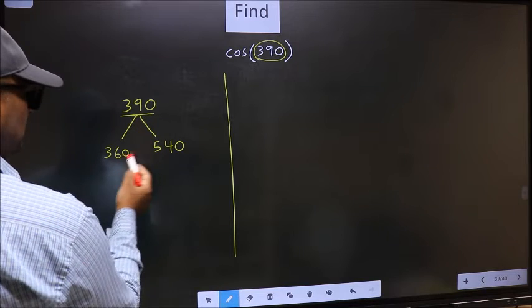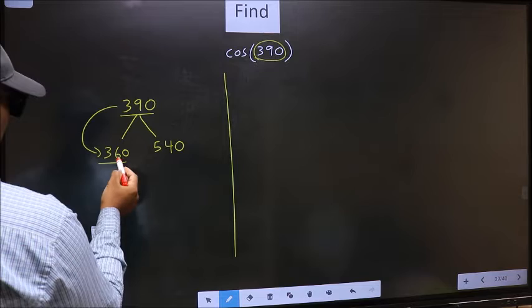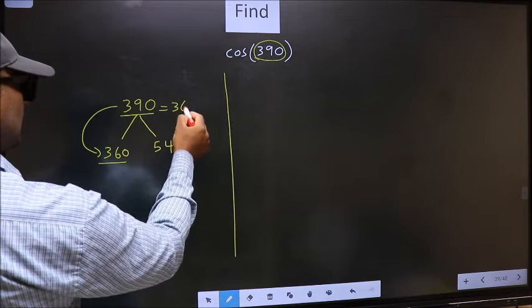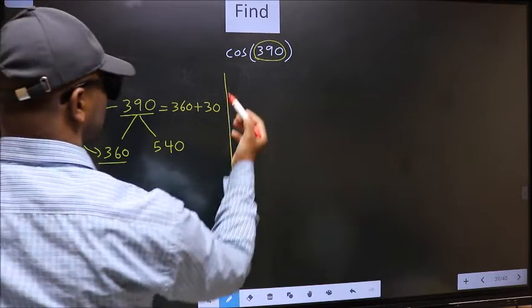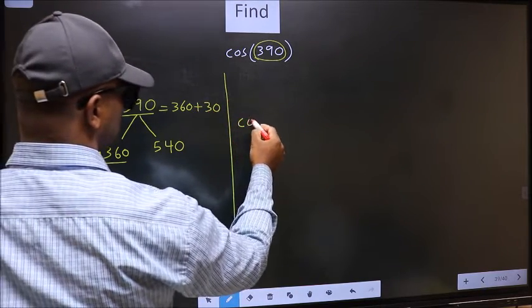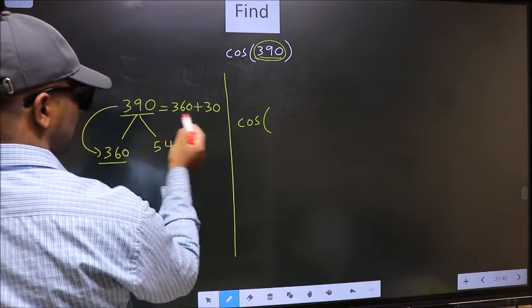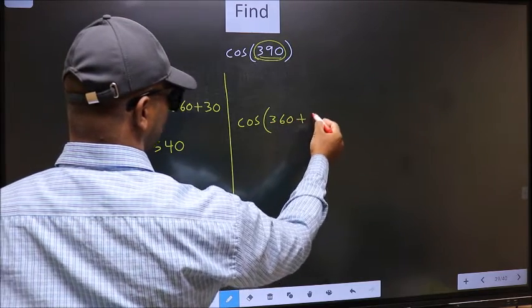Next, 390 is close to which number? 390 is close to 360. So 390 should now be written as 360+30. This will become cos(360+30).